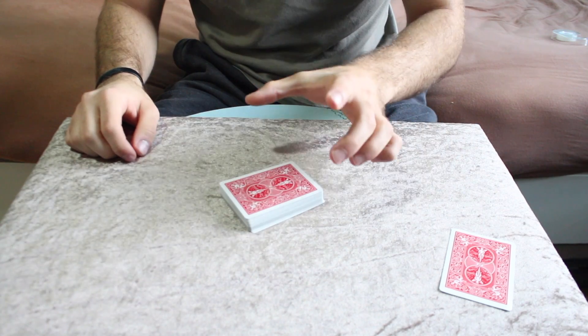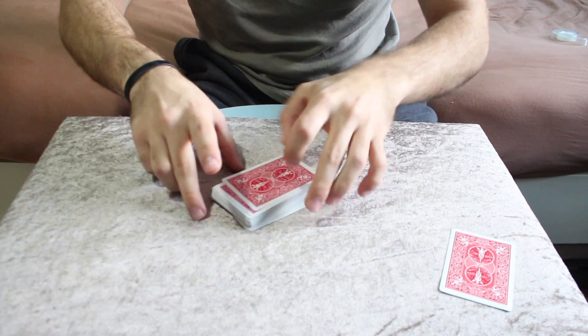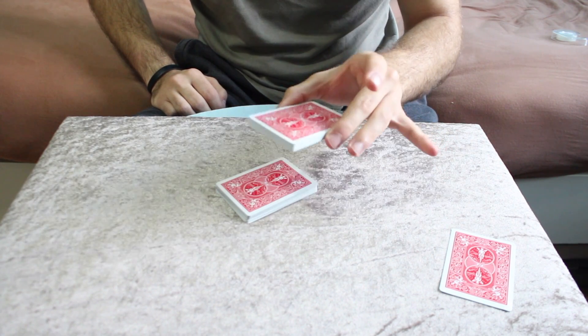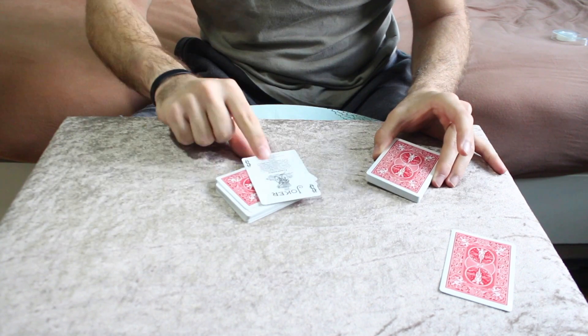One tip maybe, don't aim for a specific spot. Don't aim for your bottom third, because then you will fail. Just without looking, reach, lift up. You will feel that it really lifted up automatically, so you know you cut to the joker.